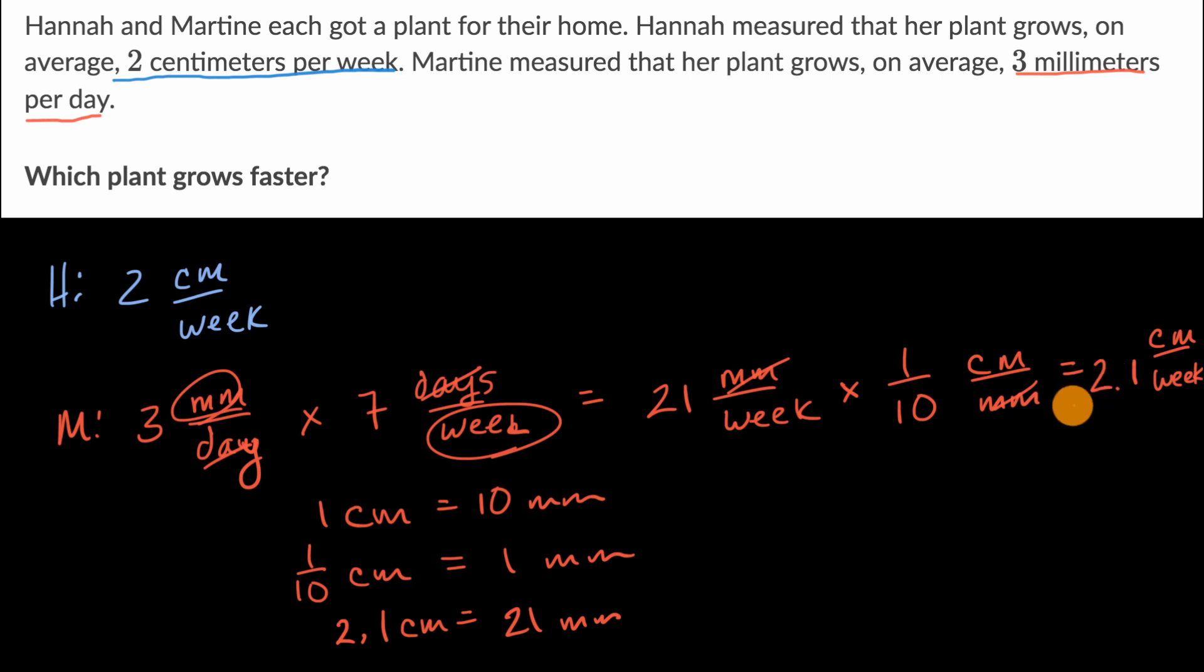And so now we can compare 2.1 centimeters per week compared to two centimeters a week. Well, it turns out that when you actually compare the appropriate units, it still turns out that Martine's plant is growing just a little bit faster.